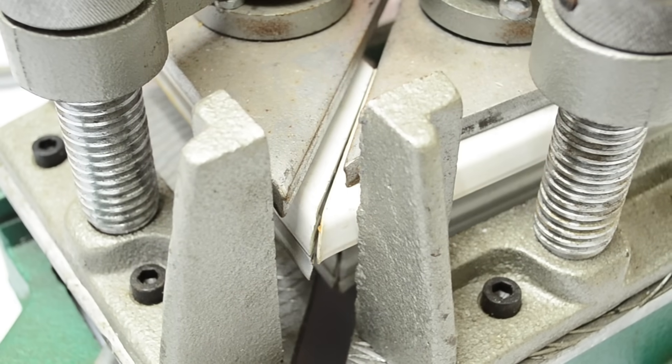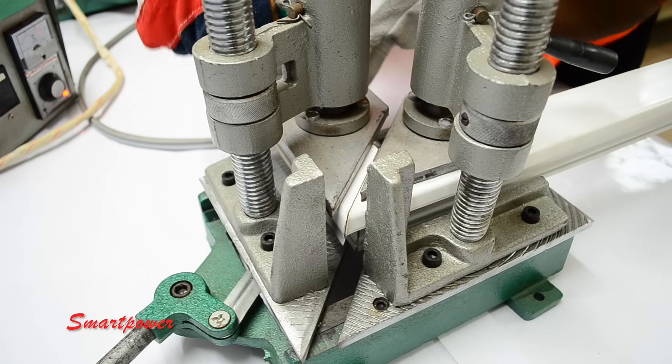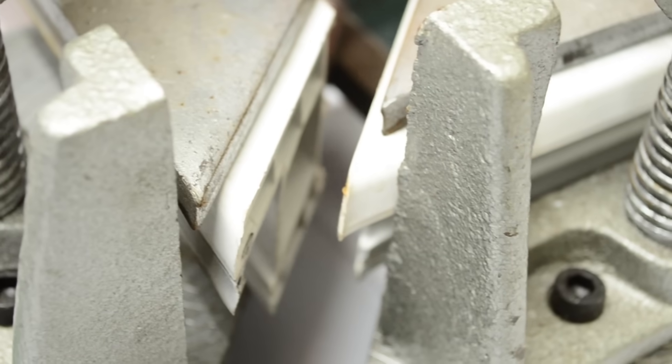Similarly, lock the second profile by pressing the second lever down. The edges must align properly for the welding to be perfect.